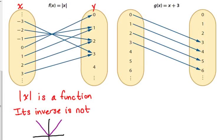This other one over here, g(x) = x + 3. If x is 0, 0 plus 3 is 3. So 0 maps to 3, 1 maps to 4, 2 maps to 5, 3 maps to 6, and so forth. Now, this is a function, x plus 3 is a function, and its inverse is as well. Let's do that in red. x plus 3 is a function.